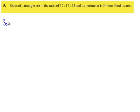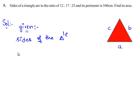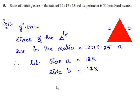So let's move to the solution. Let us consider a triangle. Let its sides be A, B, and C. In the given question, the sides of the triangle are in the ratio 12 is to 17 is to 25. Therefore, let the sides be: side A is equal to 12K, side B is equal to 17K, and side C is equal to 25K.